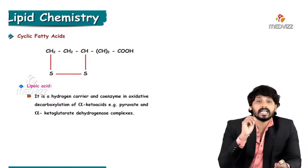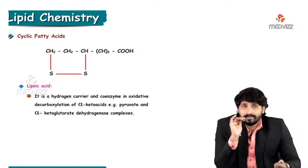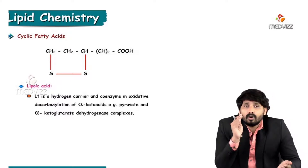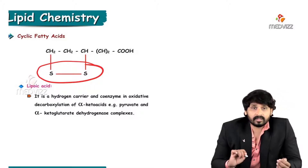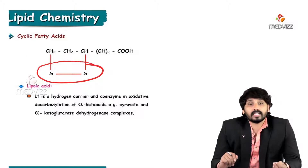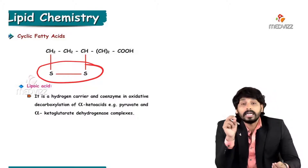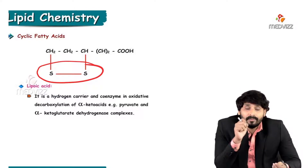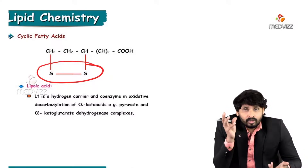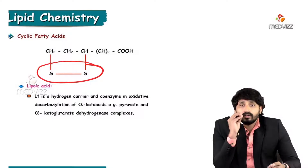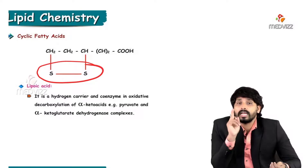Cyclic fatty acids involve addition of other substances, like sulfur groups, to the hydrocarbon side chain of a fatty acid, giving it a cyclic form. An example is lipoic acid — in its structure there is addition of sulfur groups to the hydrocarbon side chain. Lipoic acid is a hydrogen carrier and coenzyme in the oxidative decarboxylation of alpha-keto acids, such as in the pyruvate dehydrogenase complex and alpha-ketoglutarate dehydrogenase complex.